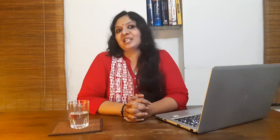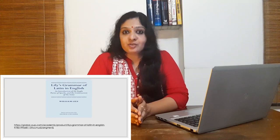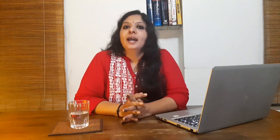There wasn't much activity in the teaching of English until the middle of the 17th century, when a new movement started to teach English grammar based on Latin. For more than 100 years, William Lillie's A Short Introduction, also known as Lillie's Grammar or Royal Grammar, was taught in schools across the country. There was a revolt against this mindless learning of Latin, represented by two schools: the humanist tradition by Erasmus, and the puritanical philosophy with Francis Bacon's Advancement of Learning published in 1609. Great scholars like Joseph Webb, Kaminsky, John Locke and others contributed to the development of language teaching in the 17th and 18th centuries.